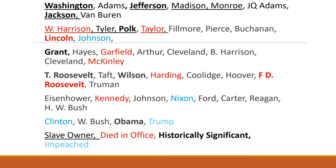Other assassinated presidents include Garfield, McKinley, and Kennedy. The presidents in blue are those who have been impeached: Andrew Johnson, Richard Nixon, Bill Clinton, and Donald Trump. None of them were actually kicked out of office — Nixon technically resigned before being impeached. I also put some of the more important presidents in bold. Polk was president during the Mexican-American War and is responsible for a lot of westward expansion. Grant was president after the Civil War and during Reconstruction, and he was from Illinois.